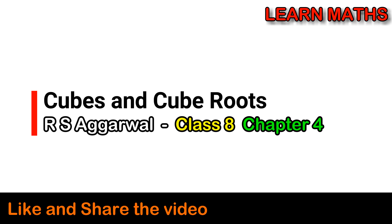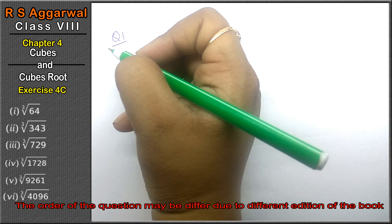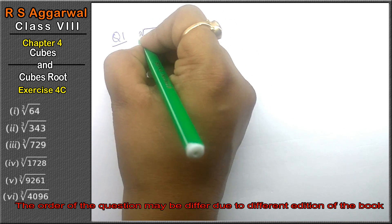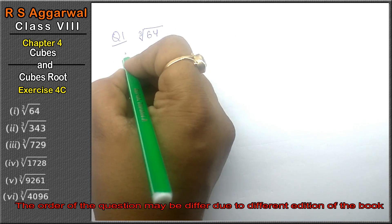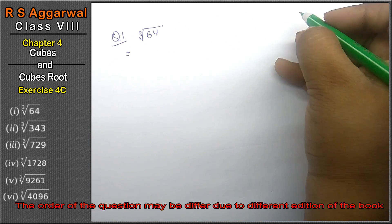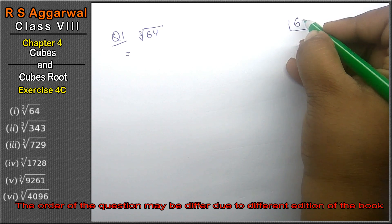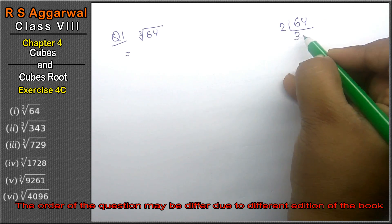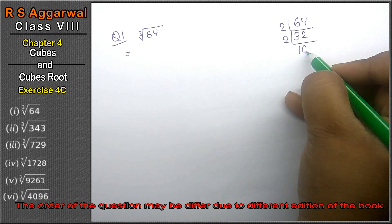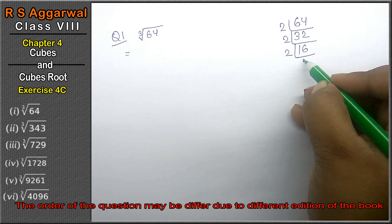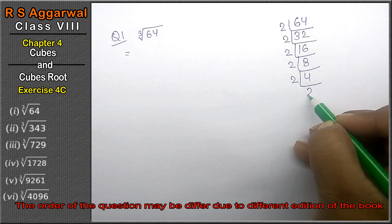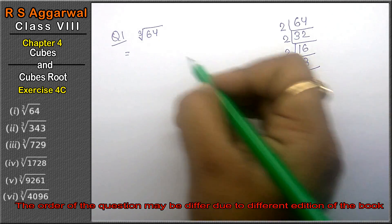Let's do question number 1 of Exercise 4C, that is Cube and Cube Root. Question number 1 is: evaluate cube root of 64. To find the cube root, first we find the factors of 64. Dividing by 2: 64→32→16→8→4→2→1. So 64 = 2×2×2×2×2×2.